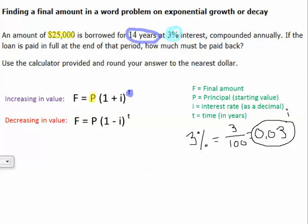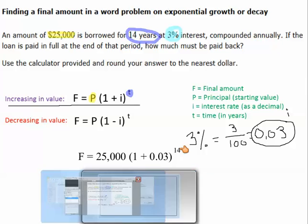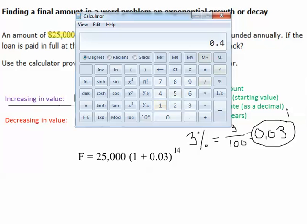Now, we are paying back a loan, so interest is going to accrue. Therefore, we're going to be using our first formula here, where we are increasing in value. So our formula is going to look something like this. We have 25,000 as our principal, 1 plus our interest rate as a decimal, raised to the power of t, which is 14. Now, where people tend to mess up is actually putting this into their calculator. Okay, so let's go ahead and let's do that together.